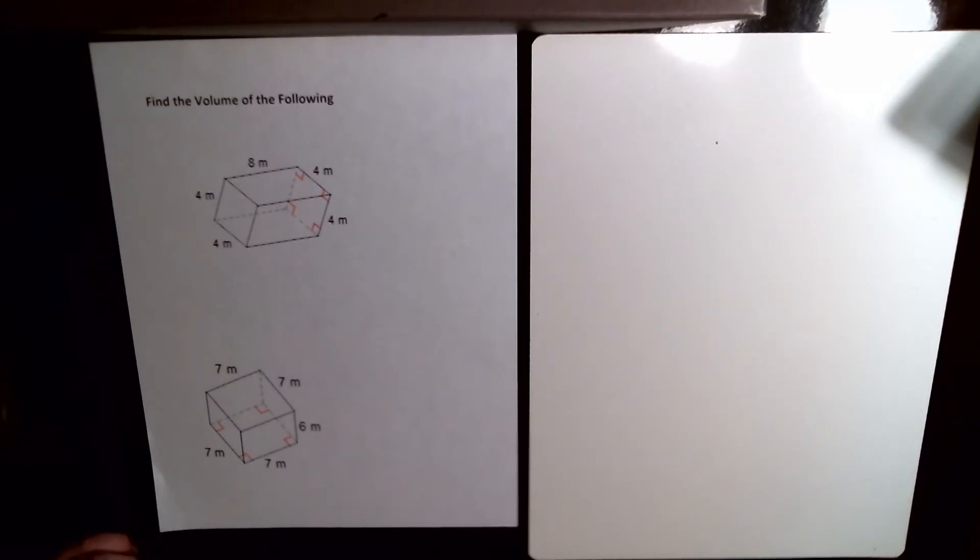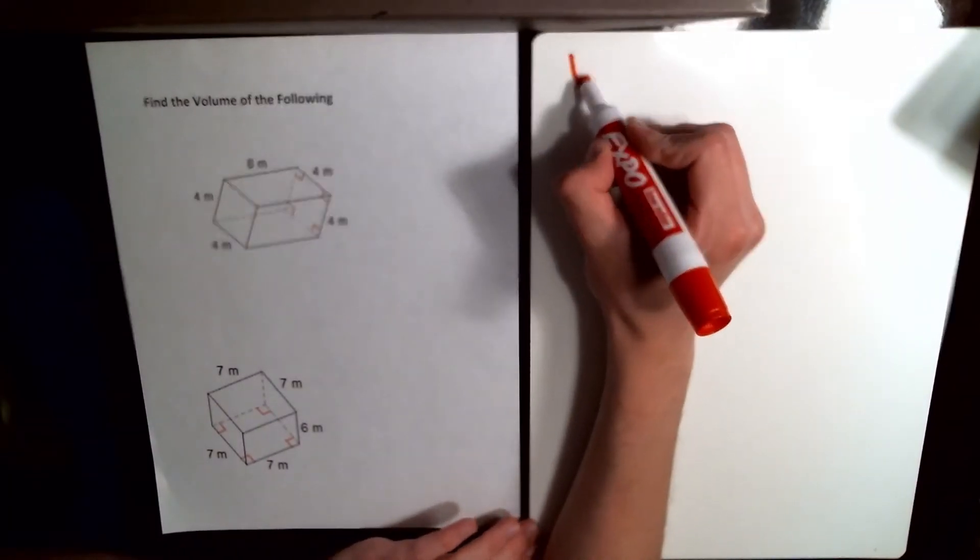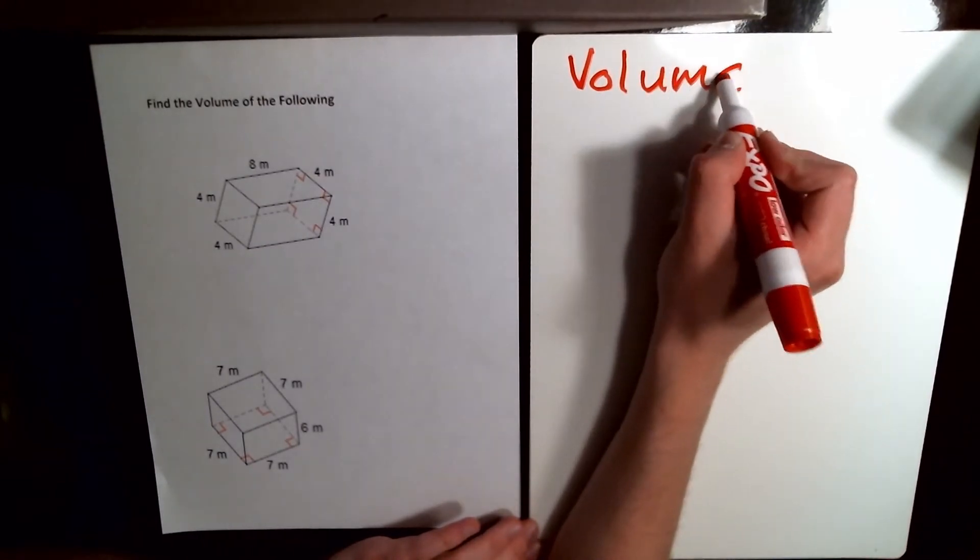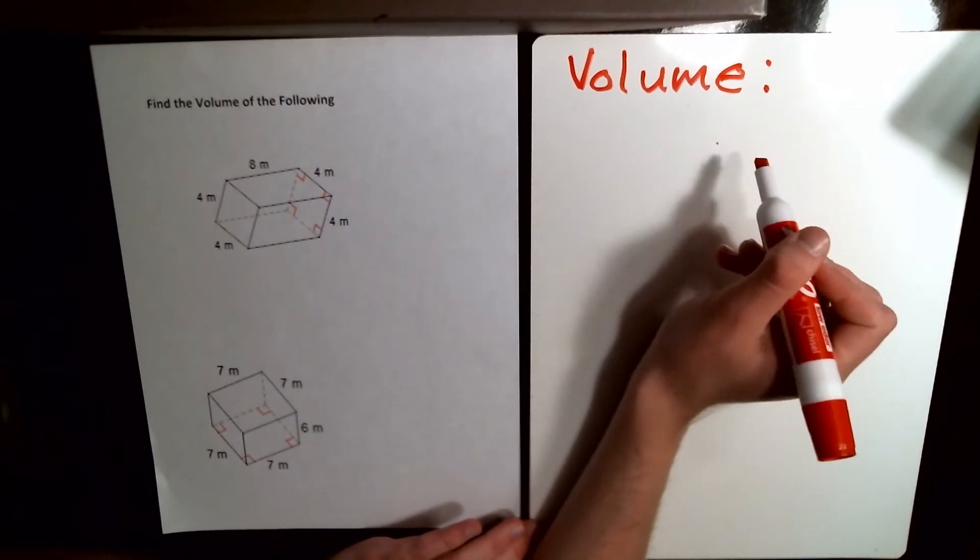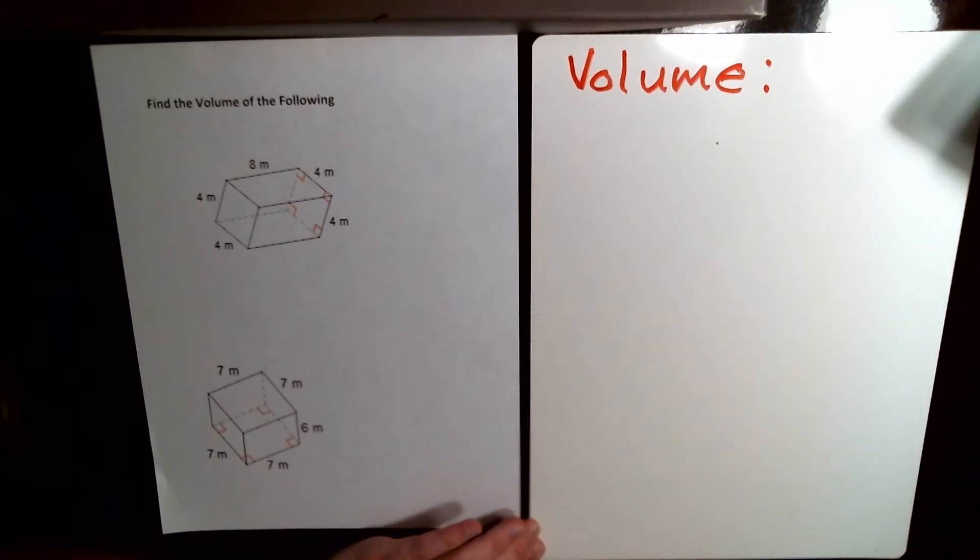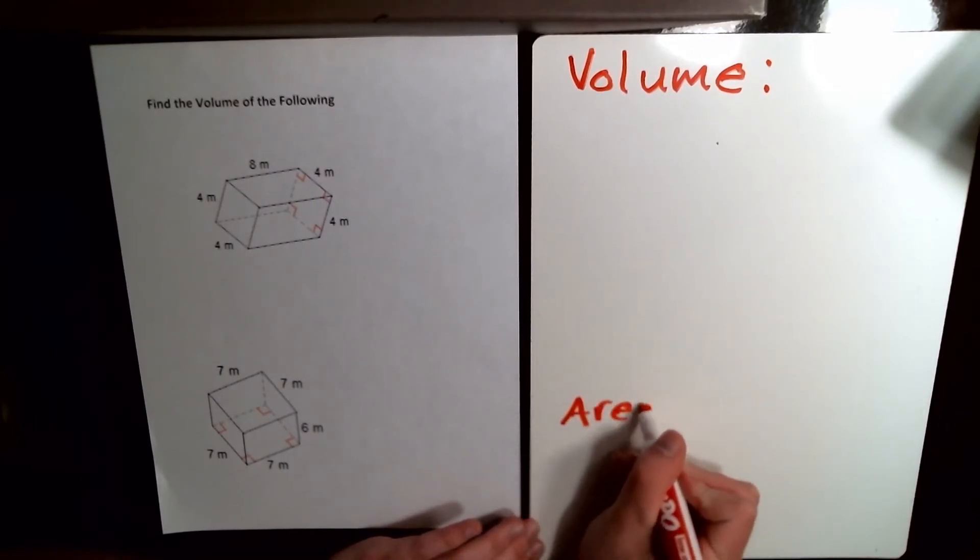Before we dive in, I really want to define this idea of volume a little bit further. Informally, we talked about volume as how much space something takes up. But I really want to formalize this. I'll maybe preface it by talking about area first. In this class, we've talked about area previously, right? Area for like a rectangle.